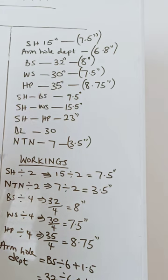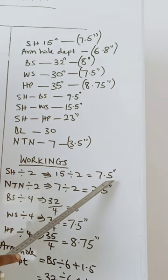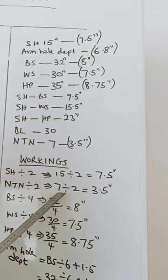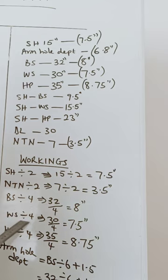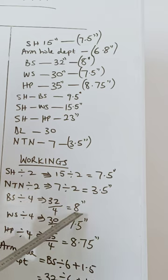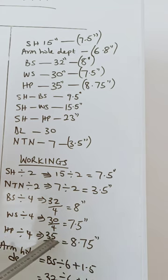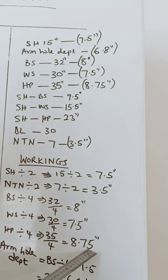Now let's take a look at the workings. We're going to be dividing our shoulder into two because we are doing the half part of the pattern. So 15 divided by 2 is 7.5 inches. Our nipple-to-nipple point is 7 divided by 2, which is 3.5 inches. Our bust, waist and hip we are going to be dividing by 4 because our fabric is folded into 4. So bust 32 divided by 4 is 8 inches, waist 30 divided by 4 is 7.5 inches, and hip 35 divided by 4 is 8.75 inches.